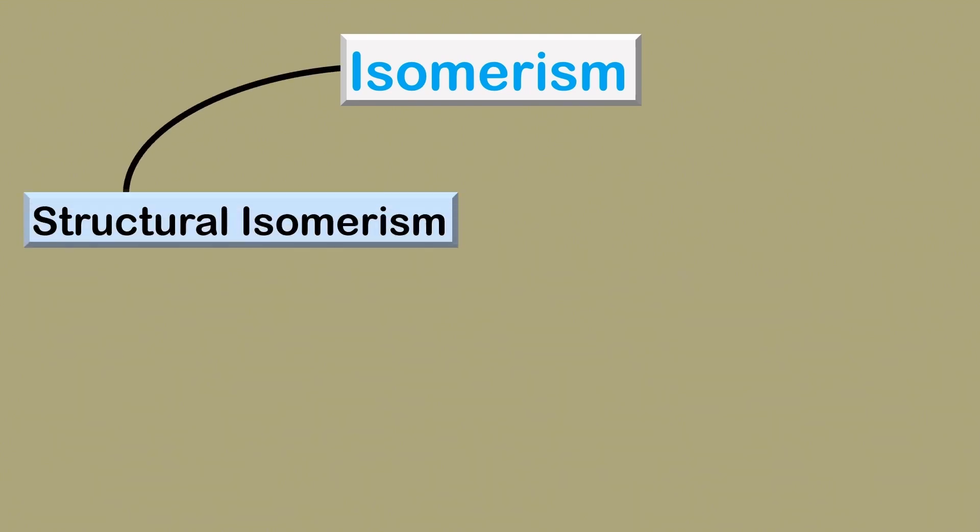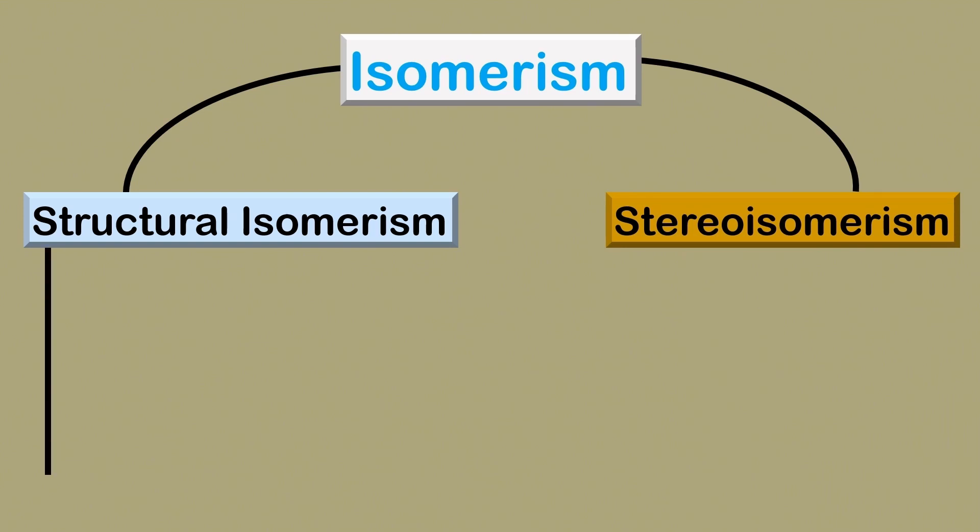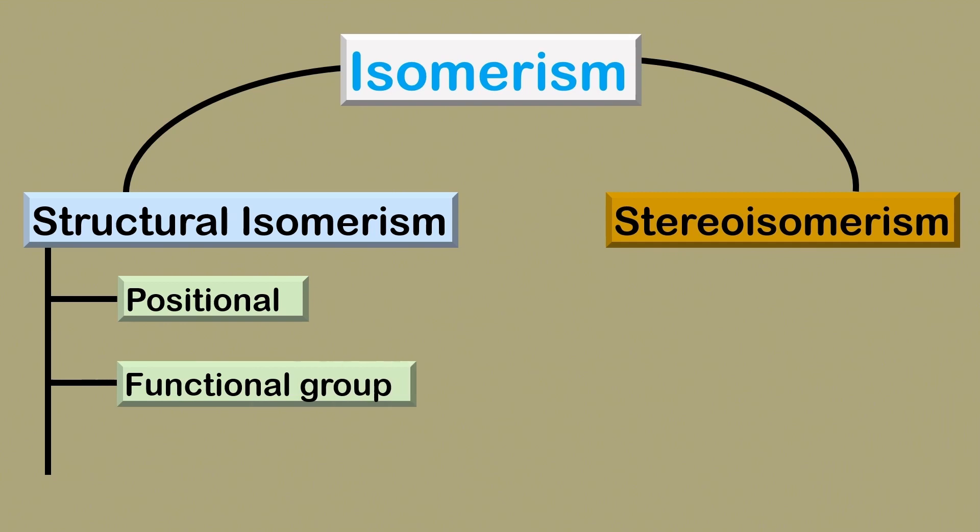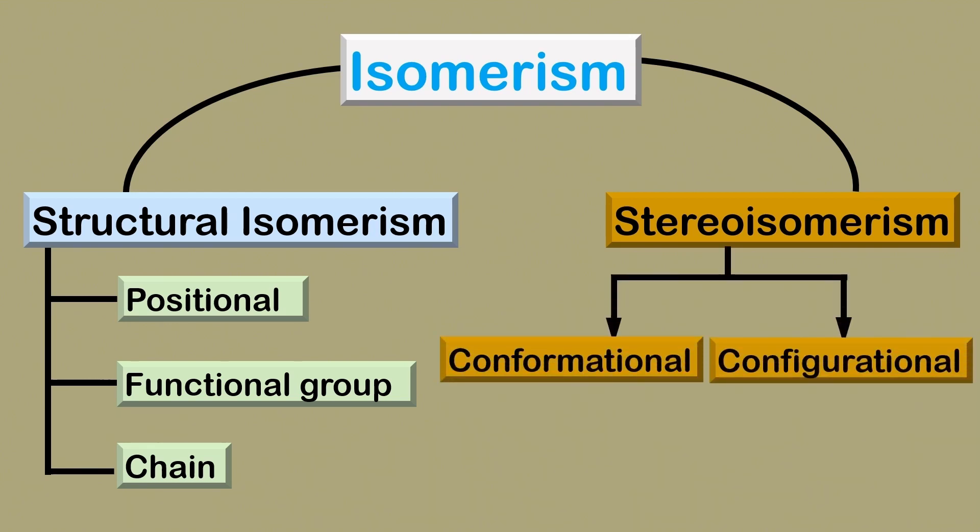Isomerism takes two main forms: structural isomerism and stereo isomerism. Structural isomerism is further divided into positional, functional group, and chain isomerism, while stereo isomerism is divided into conformational and configurational isomerism.